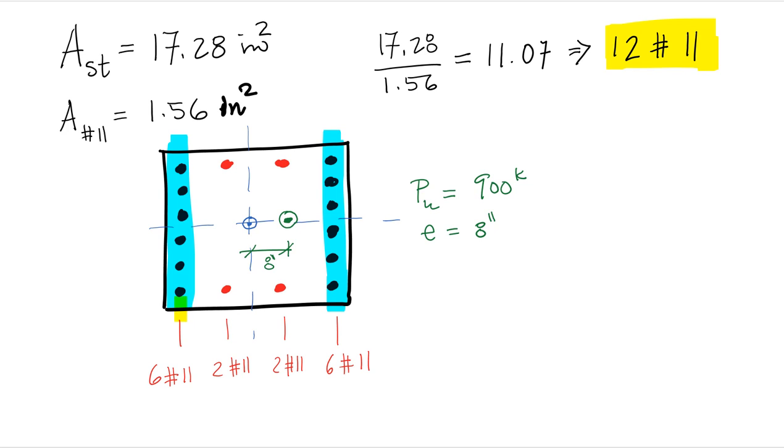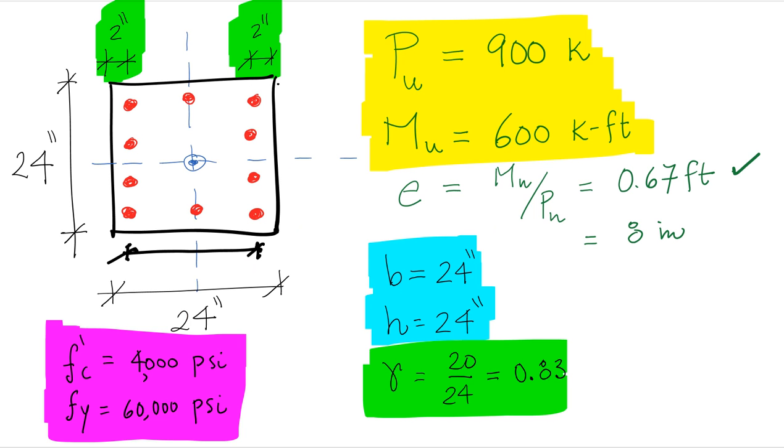And then we're going to distribute two rows of number 11s just to have a reinforcement around the perimeter of the column. And this column should be enough with this amount of reinforcement to resist these loads that were imposed on the column in terms of axial load and moment.